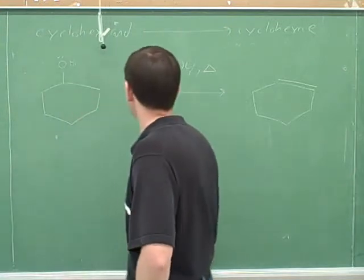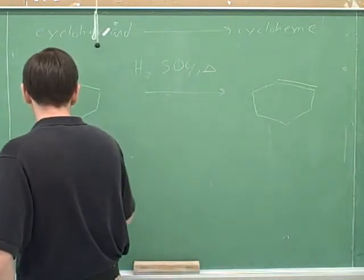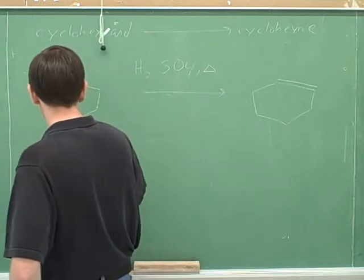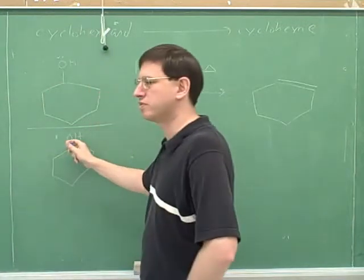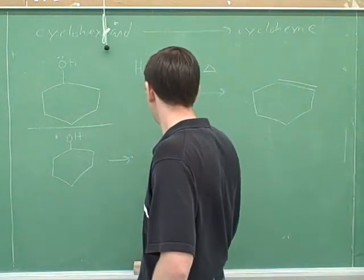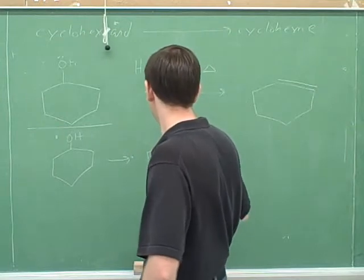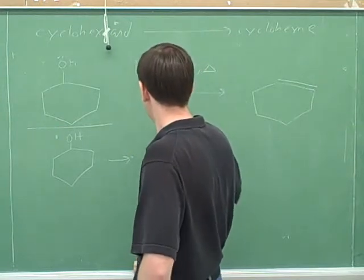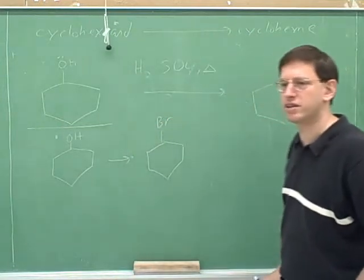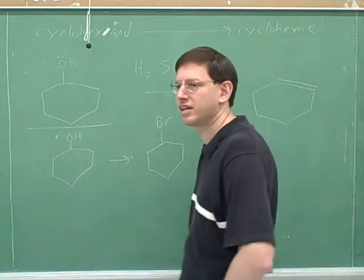But for E2, we're going to need a better leaving group. How can we turn this into a bromine? How do we turn alcohols into bromines? There's a special reagent for that.